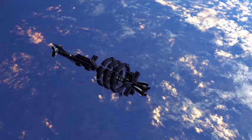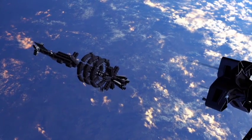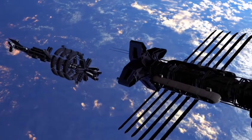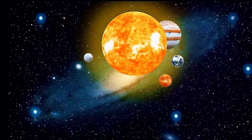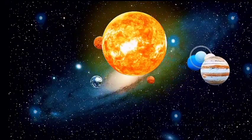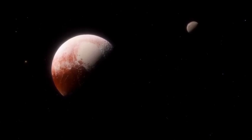Pluto's journey around the Sun is unlike that of any other planet in our solar system. It takes a staggering 248 years to complete a single orbit. Since its discovery in 1930, it hasn't even completed one full revolution.